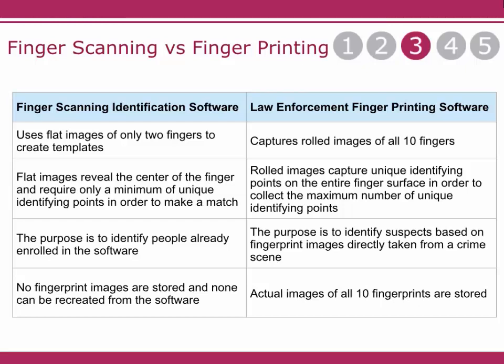Law enforcement fingerprinting software captures rolled images of all ten fingers. Rolled images capture unique identifying points on the entire finger surface in order to collect the maximum number of unique identifying points. The purpose is to identify suspects based on fingerprint images taken directly from a crime scene.